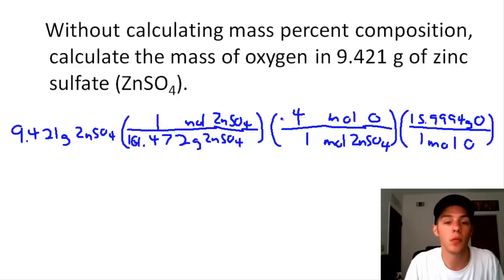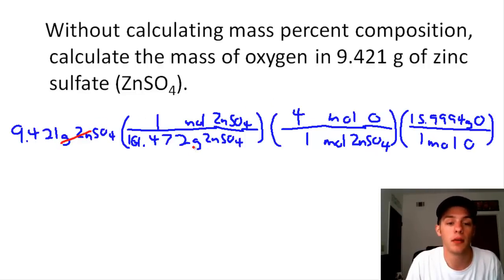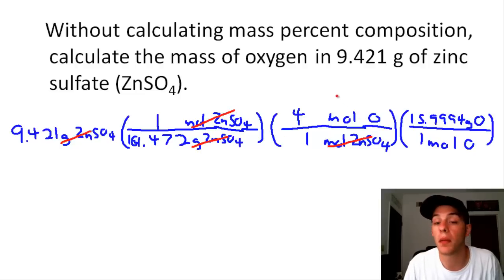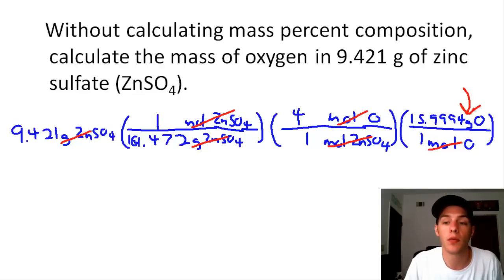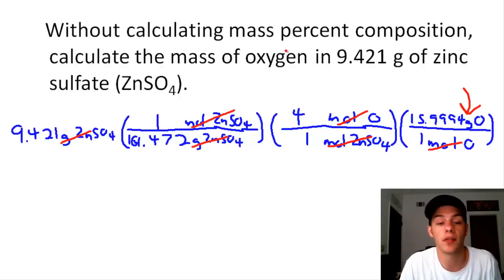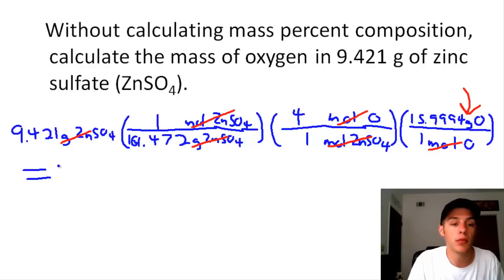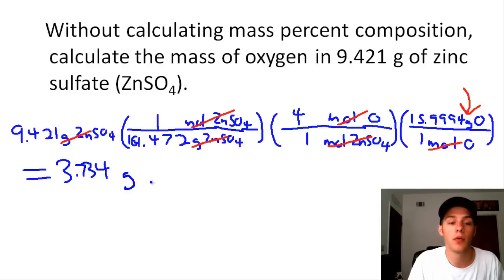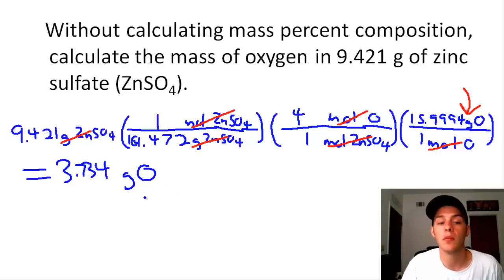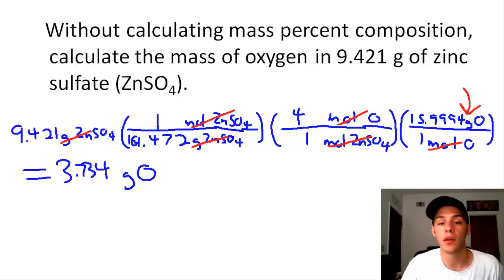That involved a lot of conversions, so let's verify units cancel: grams of zinc sulfate cancels with grams of zinc sulfate, moles of zinc sulfate cancels with moles of zinc sulfate, moles of oxygen cancels with moles of oxygen, and we're left with grams of oxygen — which is what the problem asks for. The final answer is 3.734 grams of oxygen in 9.421 grams of zinc sulfate.